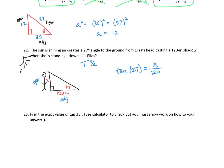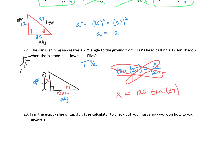When we solve these, we put it over 1 so we can cross multiply and get out of fractions. Cross multiplying: 1 times X is X, set equal to tangent of 27 times 120. I like to put the 120 out front so I don't confuse it as part of the tangent argument. Friendly reminder — this is a degree measure, and your calculator resets to radians, so change to degree mode. When you type that in, we get that Eliza is about 61.14 inches tall.